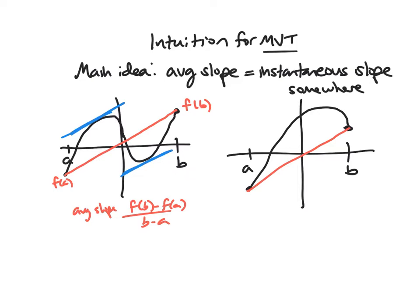In the graph on the left we actually have two such points, and in the graph on the right we only have one, where we see these lines parallel. This is your instantaneous slope or instantaneous rate of change. The Mean Value Theorem basically says that this will always happen — there will be some point on your graph on this interval where the average slope equals the instantaneous slope, but we will have some restrictions to make sure this is true, since it doesn't work for all functions.